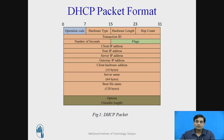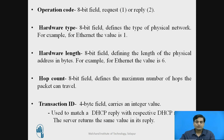To start off with the packet format, in figure one you can see the DHCP packet format. The DHCP packet has 15 fields altogether and has a maximum length of 300 bytes. We will discuss each field in detail.